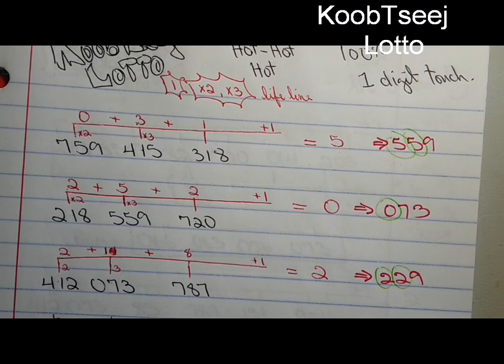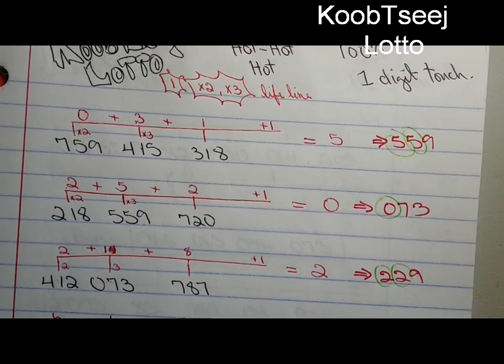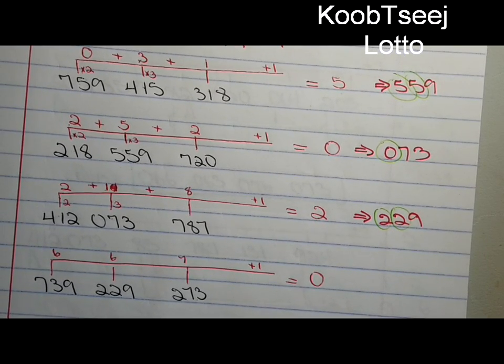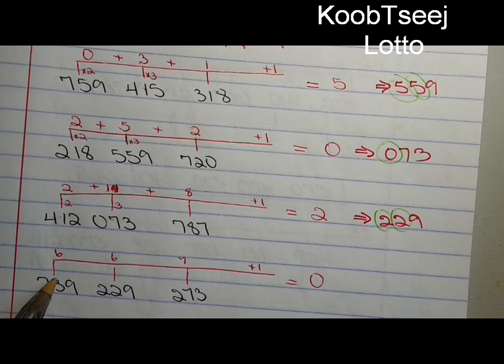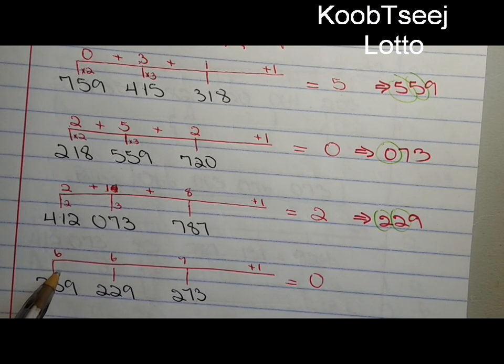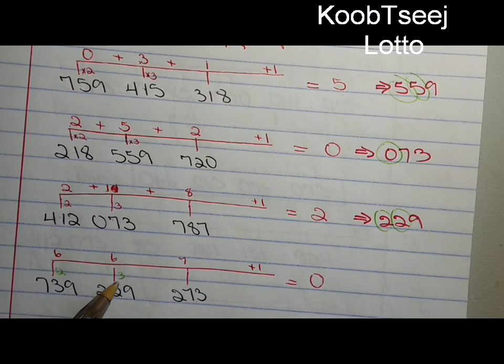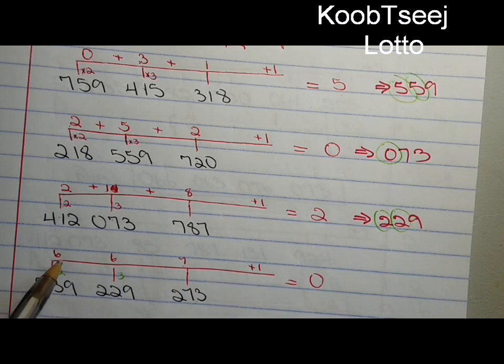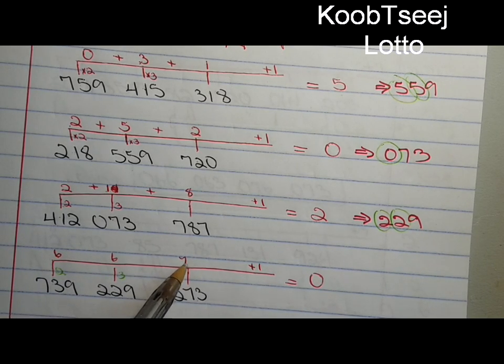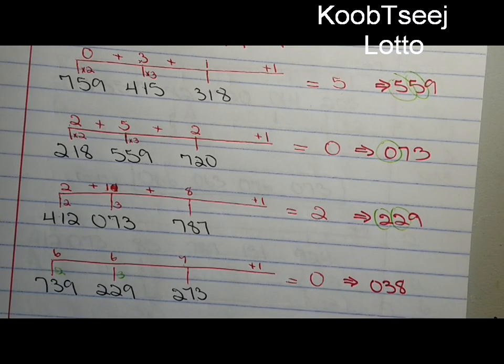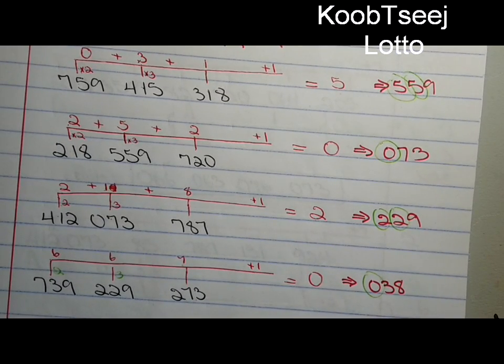Alright, next example. Remember two times three is six, three times two is six, seven, and one. Twenty, so the result is zero three eight. You hit zero right here.